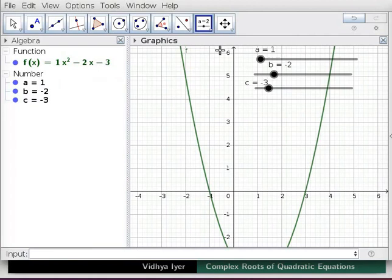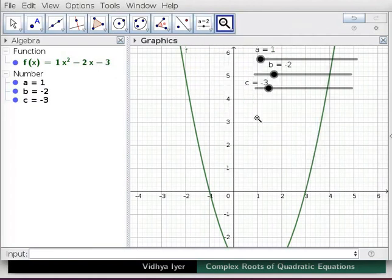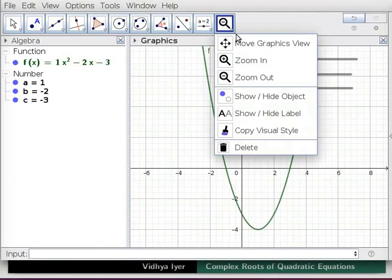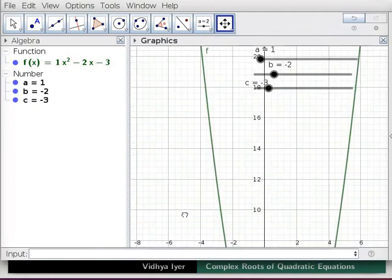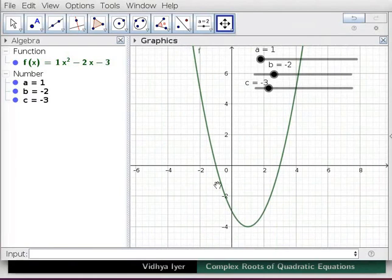The equation f(x) = 1x² - 2x - 3 appears in algebra view. Under move graphics view, click on zoom out tool. Click in graphics view, click on move graphics view tool, and drag graphics view to see parabola f.